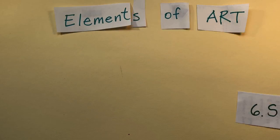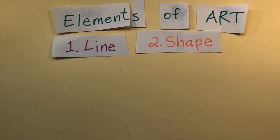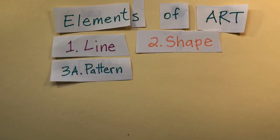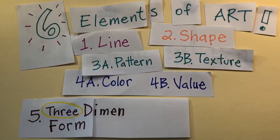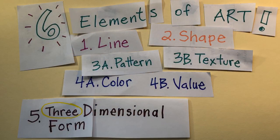The six elements of art are line, shape, pattern, texture, color and value, three-dimensional form, and space.